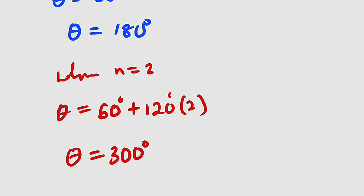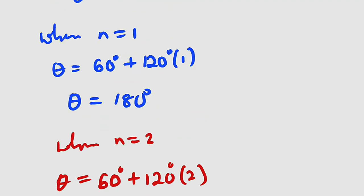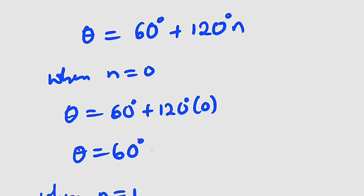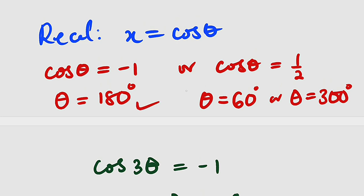Lastly, when n equals 3, this gives 360 plus 60 equals 420 degrees, which is beyond the range 0 to 360. Therefore, the three solutions are 60, 180, and 300 degrees — the same as we obtained in the first method.